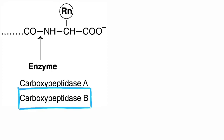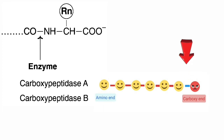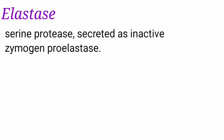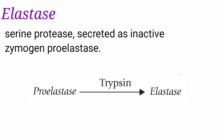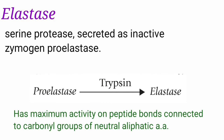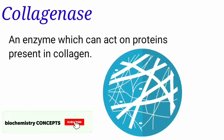Carboxypeptidase B is also an exopeptidase. It hydrolyzes terminal peptide bonds connected with basic amino acids, for example arginine and lysine, bearing the free carboxylic group. Elastase is a serine protease, secreted as the inactive zymogen pro-elastase and activated by trypsin. It has maximum activity on peptide bonds connected to carboxylic groups of neutral aliphatic amino acids, for example alanine, serine, and glycine. Collagenase is an enzyme that acts on peptide bonds in collagen.